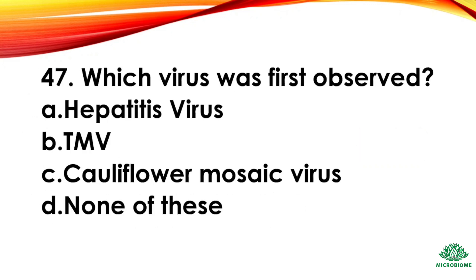Question 47: Which virus was first observed? Options: hepatitis virus, TMV (tobacco mosaic virus), cauliflower mosaic virus, none of these. The right answer: option B, tobacco mosaic virus.